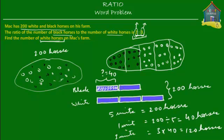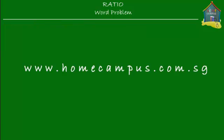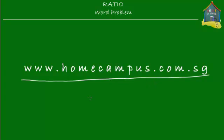How about the black horses? The black horses are equal to 2 units, which means 40 times 2, which is 80. So there are 80 black horses and 120 white horses. 120 plus 80 equals 200, so in all there are 200 horses. If the ratio of black to white is 2 to 3, then there are 80 black horses and 120 white horses. Hope you understood it — go solve more word problems at www.homecampus.com.sg. That's all for now, this is Em signing off. Bye-bye.